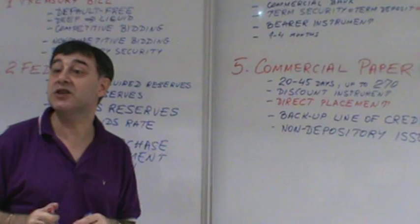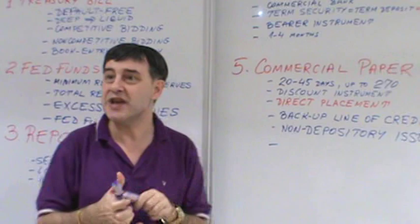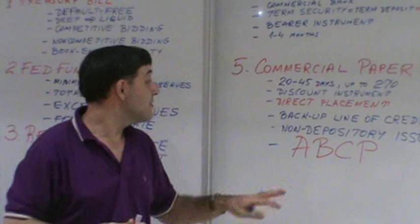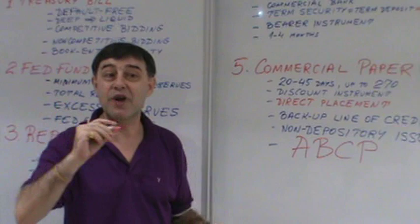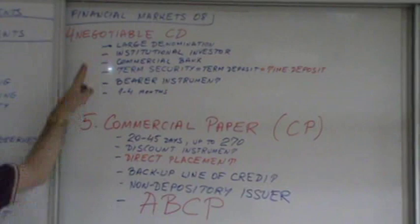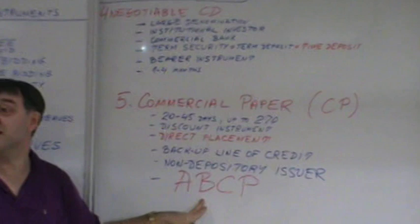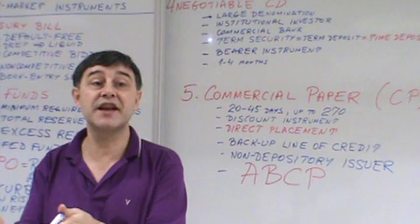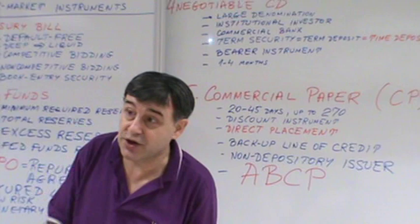One very special type which became prominent is a variation of commercial paper called asset-backed commercial paper — abbreviated as ABCP or AB-CP. Certificate of deposit is shortened as CD; commercial paper is shortened as CP. This is CP which is secured with assets, usually secured with financial instruments — could be secured with mortgages or some other assets.